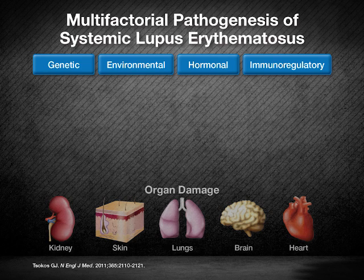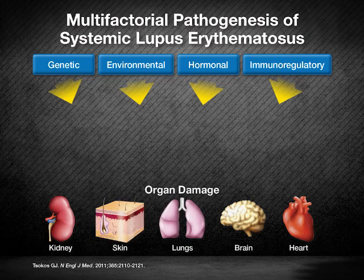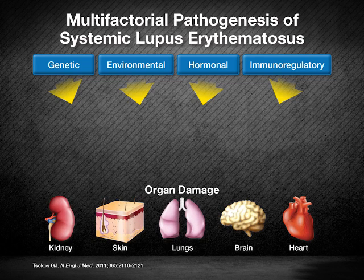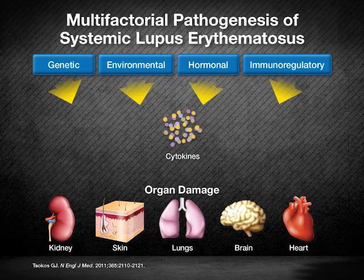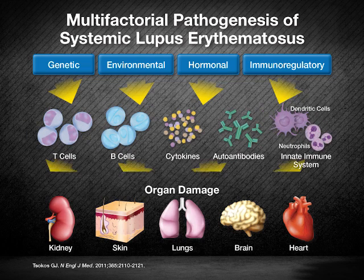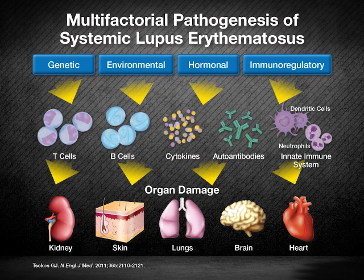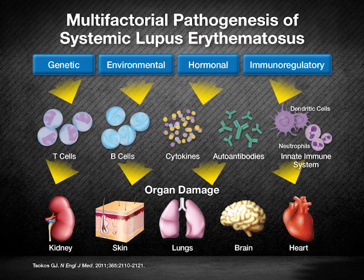These factors coalesce to create the underlying characteristic immunobiologic disturbances of lupus, including the aberrant production of many cytokines and the aberrant function of T cells, B cells, and cells of the innate immune system, such as dendritic cells and neutrophils.